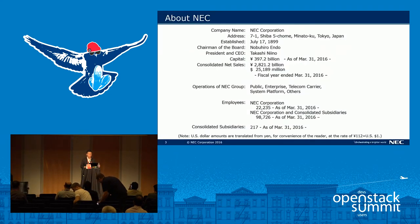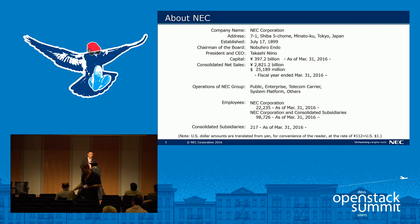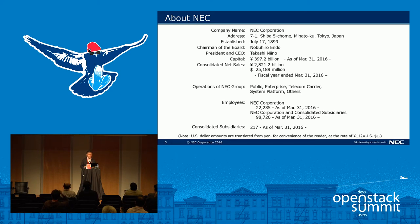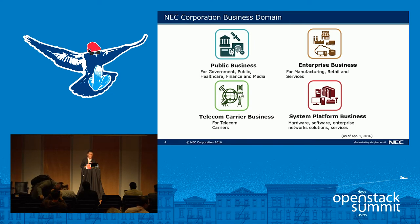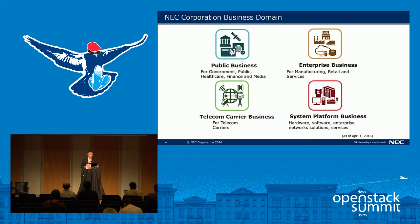Let me briefly introduce NEC. That slide shows our main statistics. We are based in Japan, established in 1899, so our history is over 100 years. Our business area is mainly IT and network. Our employees total 100,000 as of 2016 and net sales are about 25 billion dollars. Our business domains are categorized into four areas. Public business includes government systems, healthcare, finance, and media. This domain requires very stable and secure solutions.